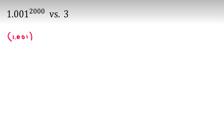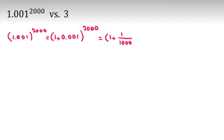We are comparing 1.001 to the power of 2000 and the number 3 — which of them is greater? We can write 1.001 to the power of 2000 as 1 plus 0.001, raised to the power of 2000, which equals 1 plus 1 over 1000, all to the power of 2000.